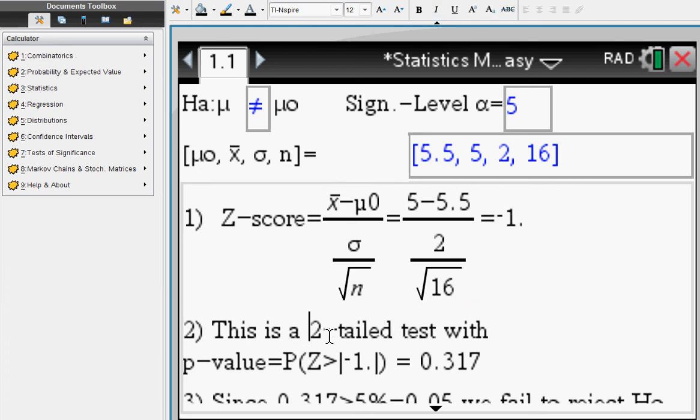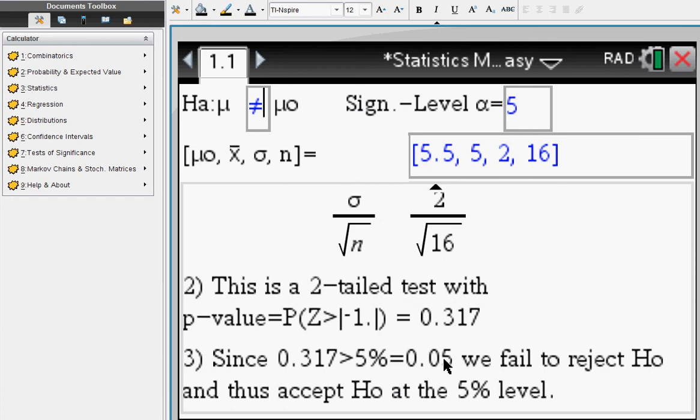It's a two-tailed test because our Ha is not equal. So we're going to arrive at a p-value of 0.317, which is clearly more than 5 percent, so we actually fail to reject H naught.